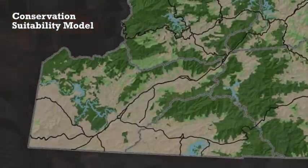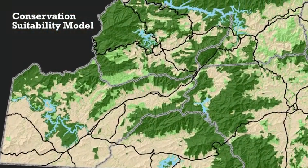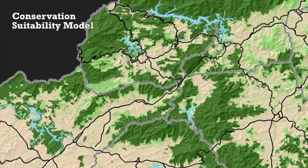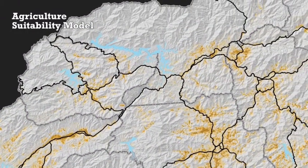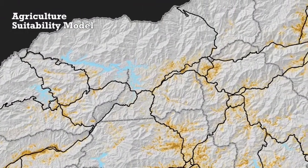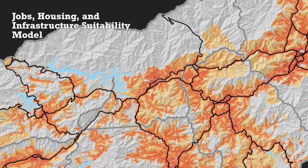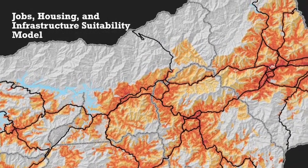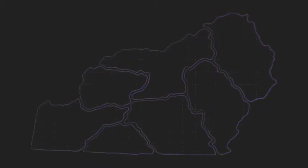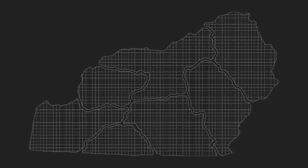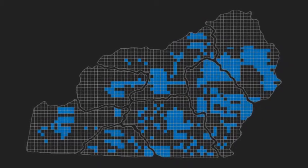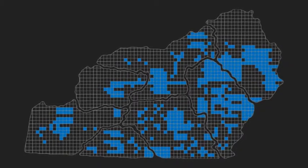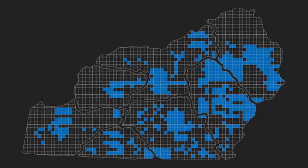To help illustrate the choices that can be made as the region prepares for growth, we developed a series of suitability and conflict maps. With these maps, we can easily view areas where potential land use conflict may exist and trade-offs may need to happen. A suitability map is the result of suitability modeling, which is a process that determines the fitness of an area of land, ranking from high to low in suitability, or appropriateness for a specified use.